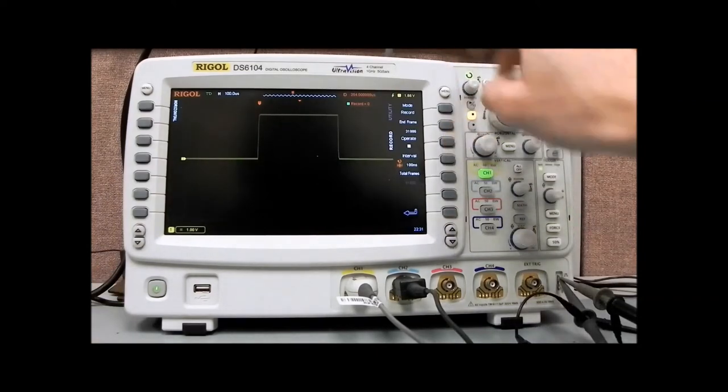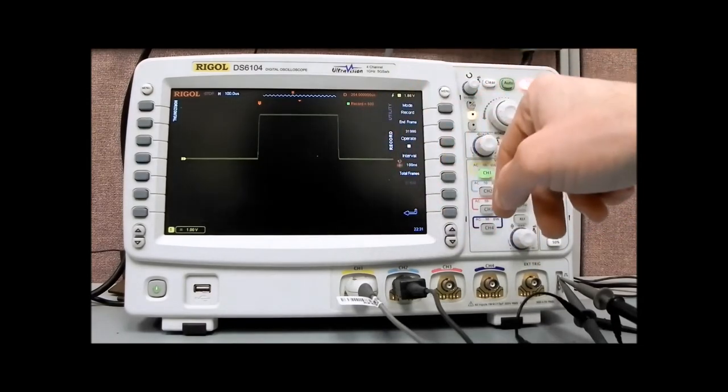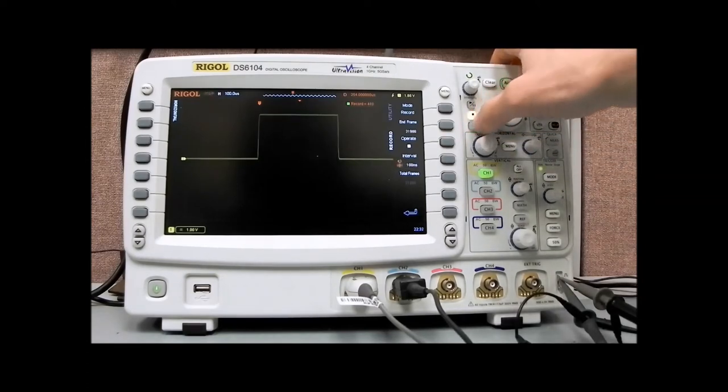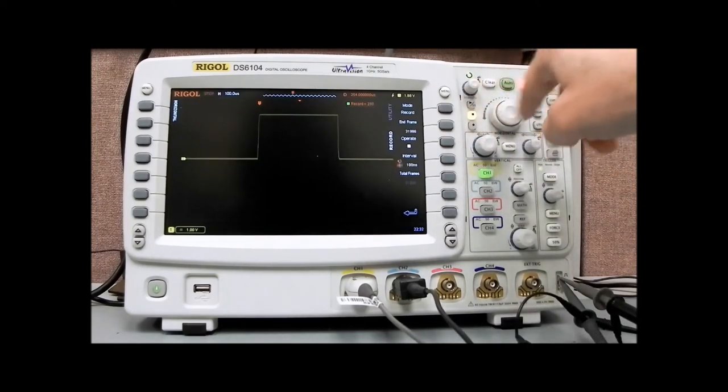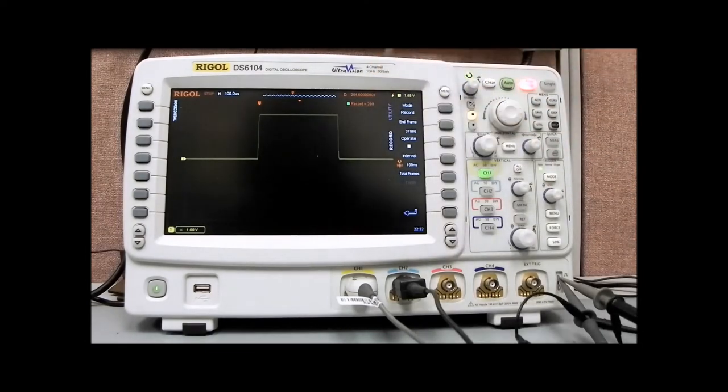To record, very straightforward, we can press the operate key here and you'll see we'll start to collect. We can stop it, or even better, we can use the record/stop buttons in this ultra-vision area. You see we've collected 280 waveform recordings, and now we can actually analyze that data.